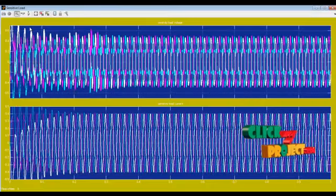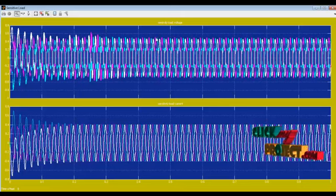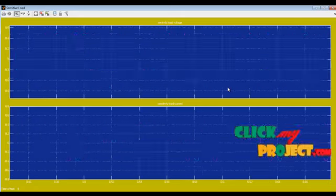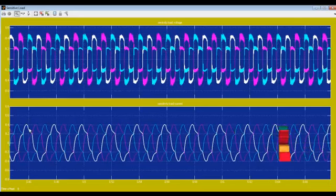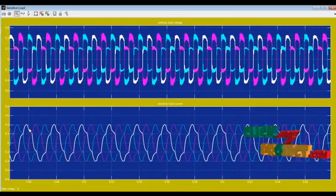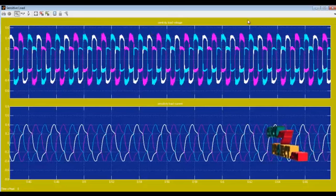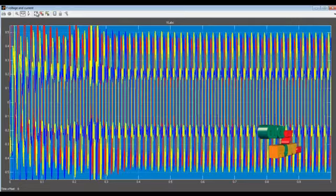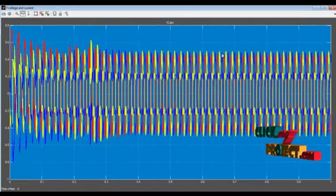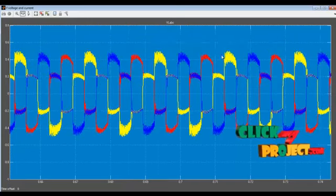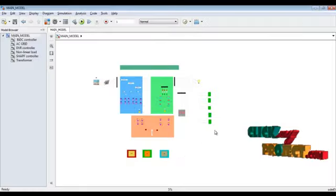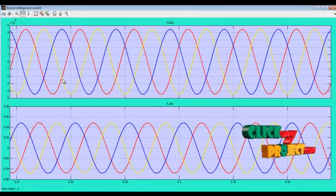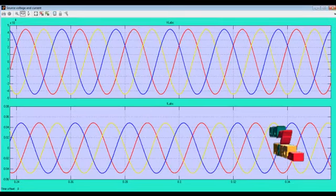Next, this is our sensitive load results. We can see nearly smooth waves of every curve line. This is our sensitive load voltage and sensitive load current. Now click the button and use the auto scale block. Then we can see the results. This is the load ABC. This is our source. Let's see another plot.